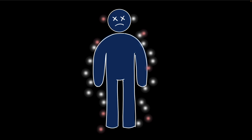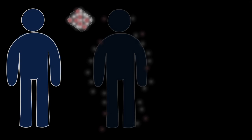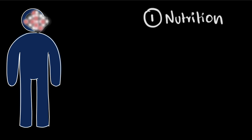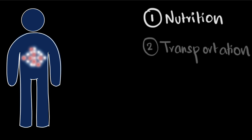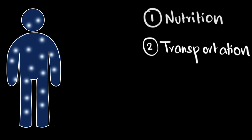By carrying out life processes. The first one is nutrition, where we eat and digest the food to get the nutrients. The next one is transportation, where we transport the nutrients to all the cells of the body.